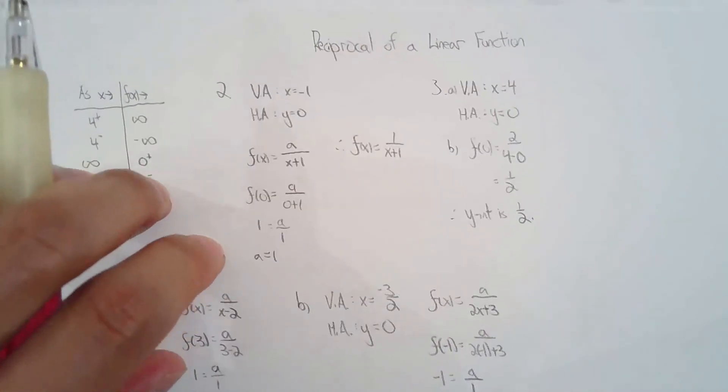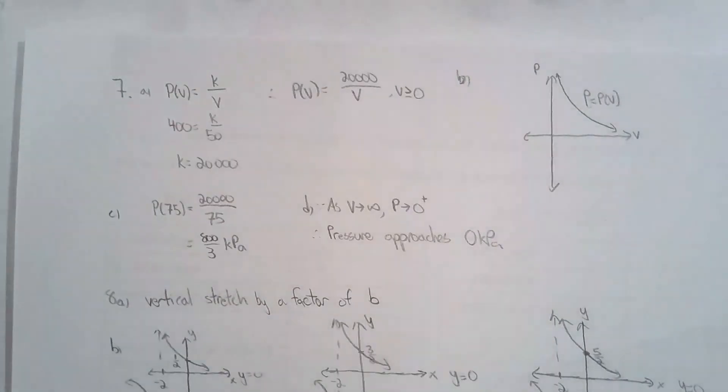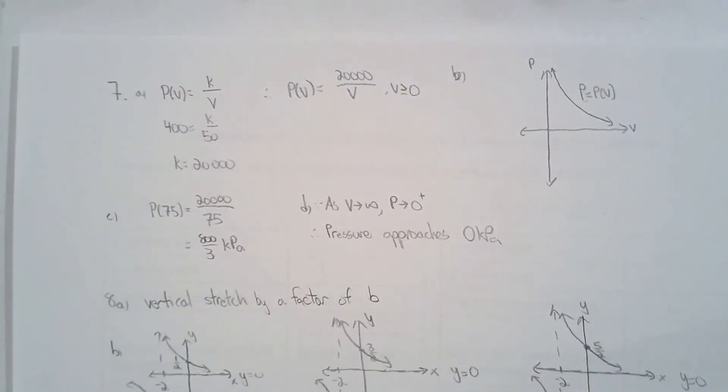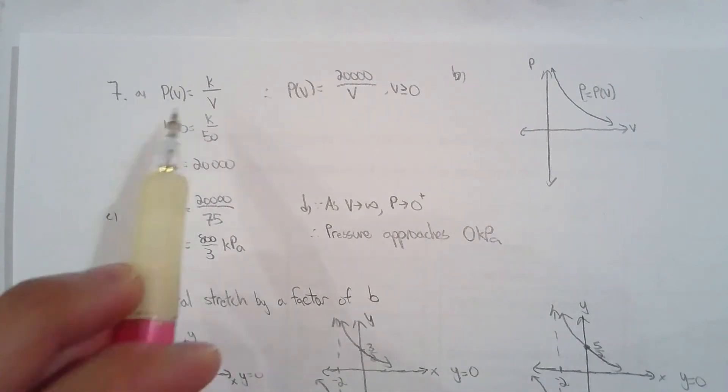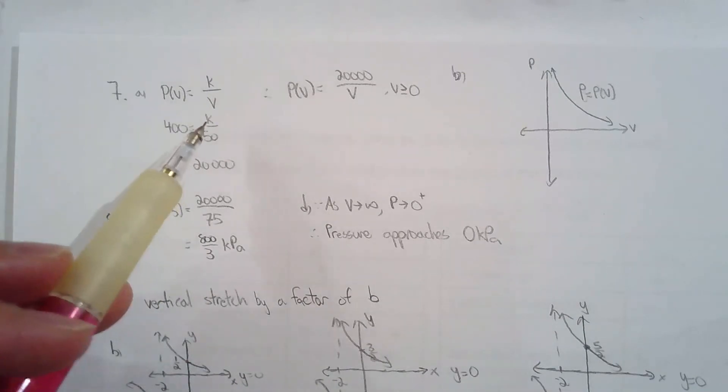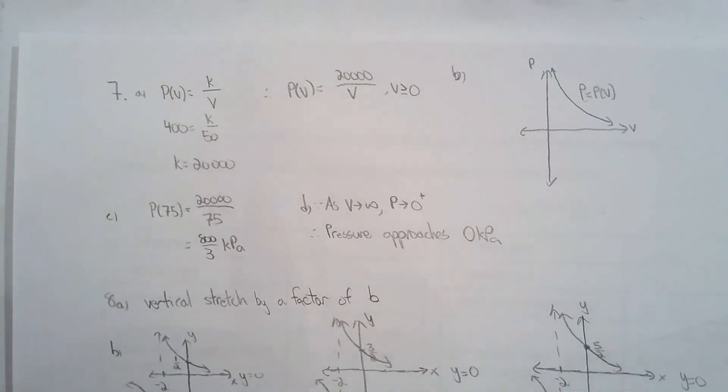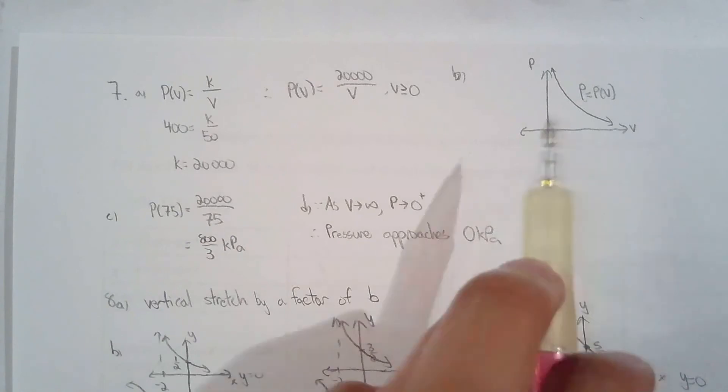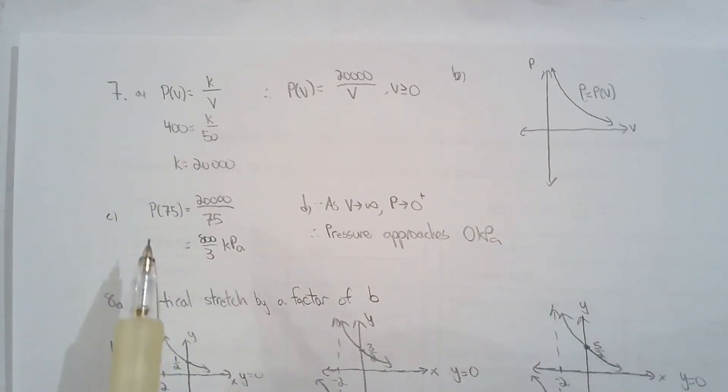For question 7, there's a basic word problem. It says that pressure is inversely proportional to the volume. So that basically says that as pressure increases, volume decreases, and as volume increases, pressure decreases. So it's k over v, solve for k. And then they ask us to graph it. And if they give me the volume, I can solve for the pressure. That's what I did for part C.